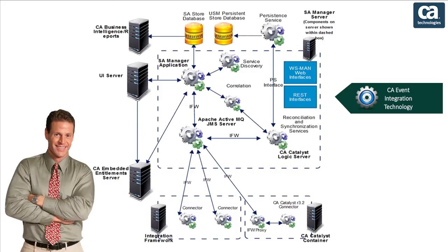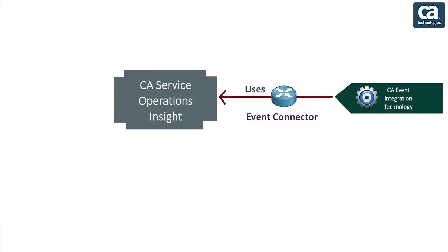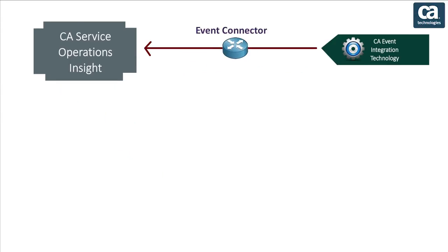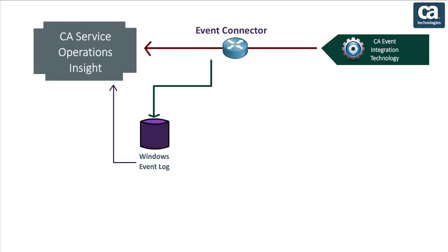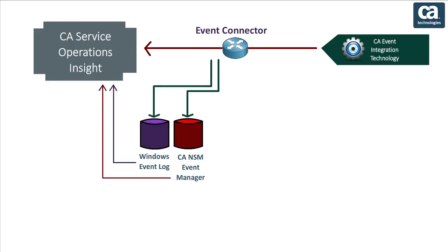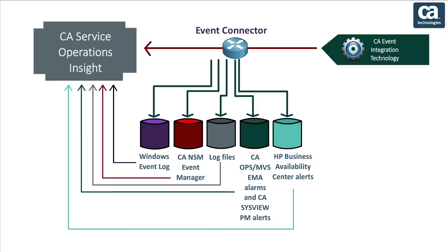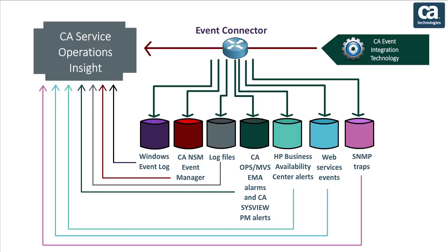Let us move on to the next component: event integration. CASOI uses the CA event integration technology to enable integrations with low-level event sources through the event connector. The event connector provides integration with several raw event sources: Windows event log, CANSM agent messages from a CANSM event manager or agent, log files, CA OPS or MVS EMA alarms and CASysview, PM alerts, HP Business Availability Center alerts, web services events, and SNMP traps.